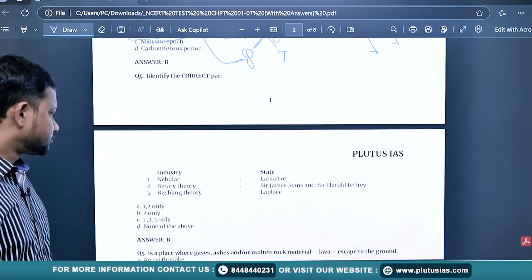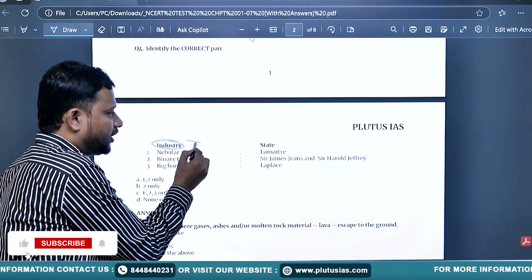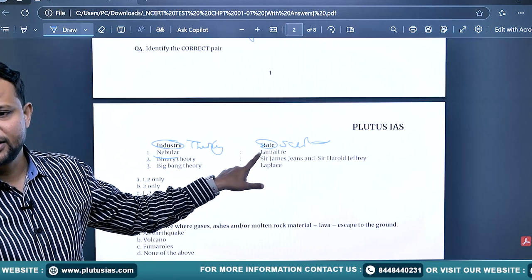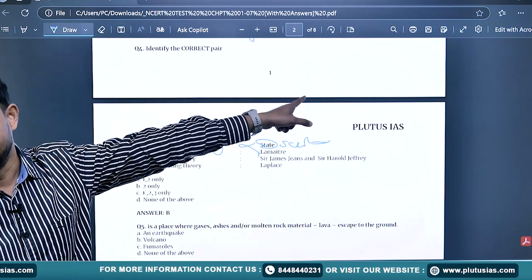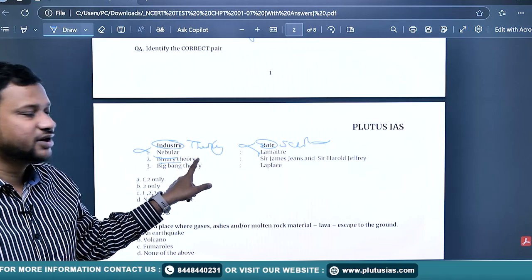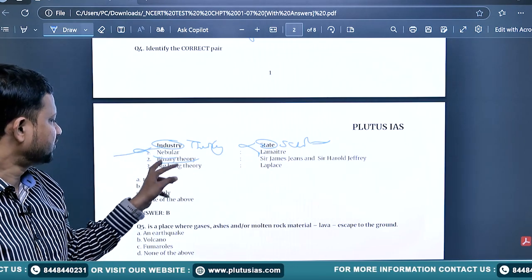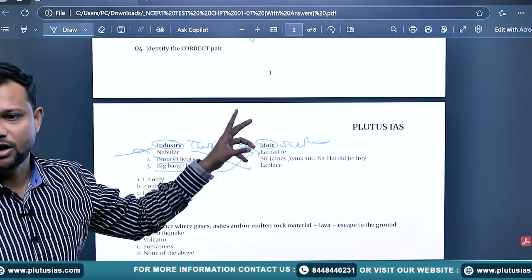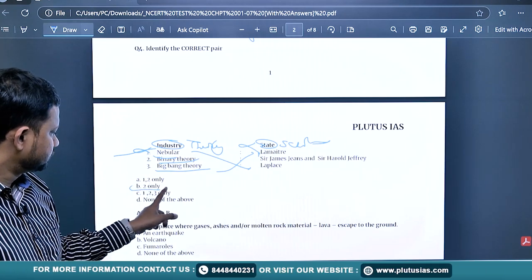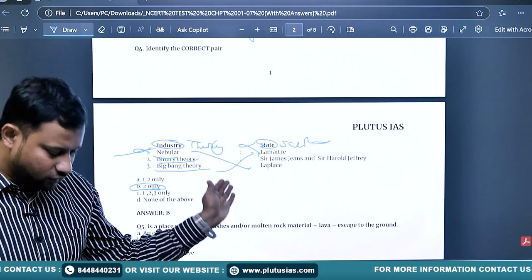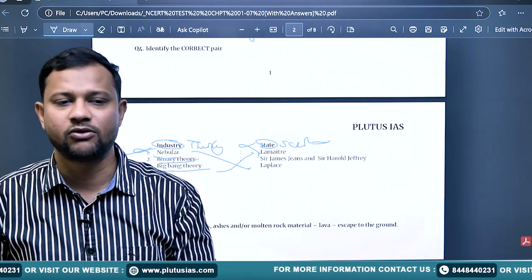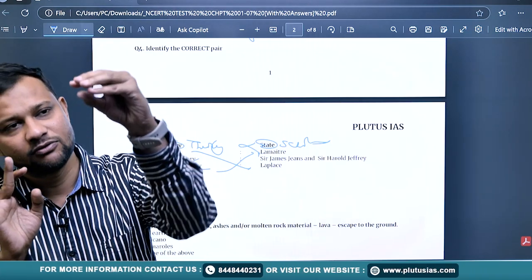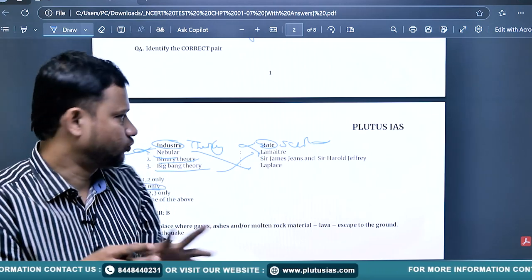Identify the correct pair of theory and scholar. Nebular hypothesis was given by Laplace, not Lamet Ray. Binary theory by Jeans and Jeffreys. Big Bang theory gained by Lamet Ray. You will find these pairs have been somehow switched, so the answer is two only. This way, apart from this, you will find there are many theories given in NCERT, however hardly there is reference about this in depth detail. Four to five theories have been concluded in a single paragraph.